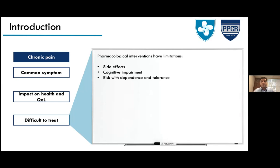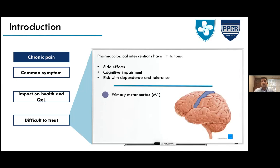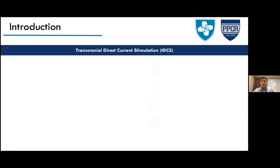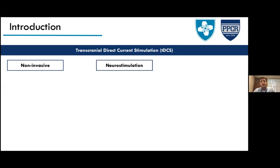We know that pain processing is related to specific brain areas: the primary motor cortex, the somatosensory cortex, and the dorsolateral prefrontal cortex. This is where tDCS makes sense — transcranial direct current stimulation has the objective of targeting some of these areas related to pain processing in the brain.